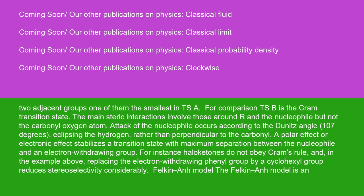A polar effect or electronic effect stabilizes a transition state with maximum separation between the nucleophile and an electron-withdrawing group. For instance, haloketones do not obey Cram's rule. And in the example above, replacing the electron-withdrawing phenyl group by a cyclohexyl group reduces stereoselectivity considerably.